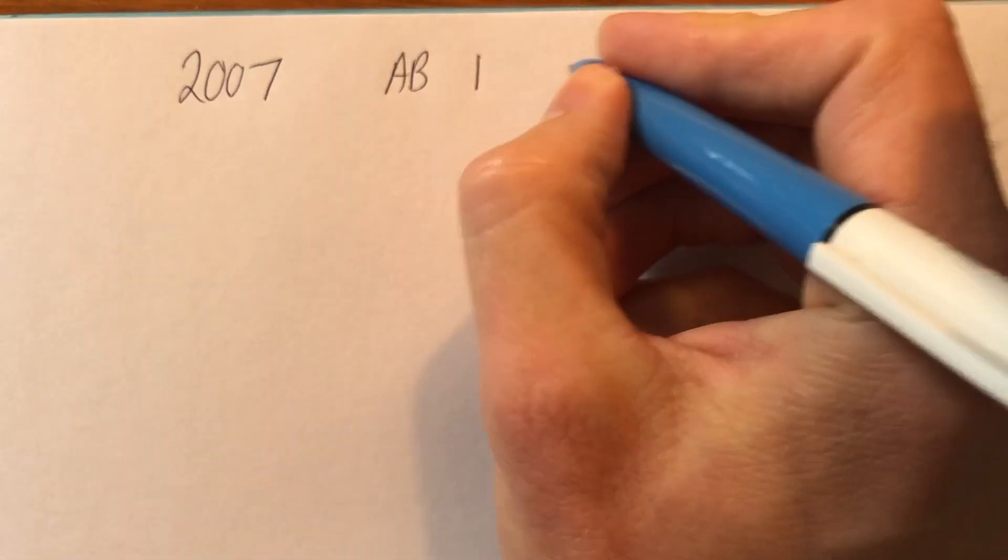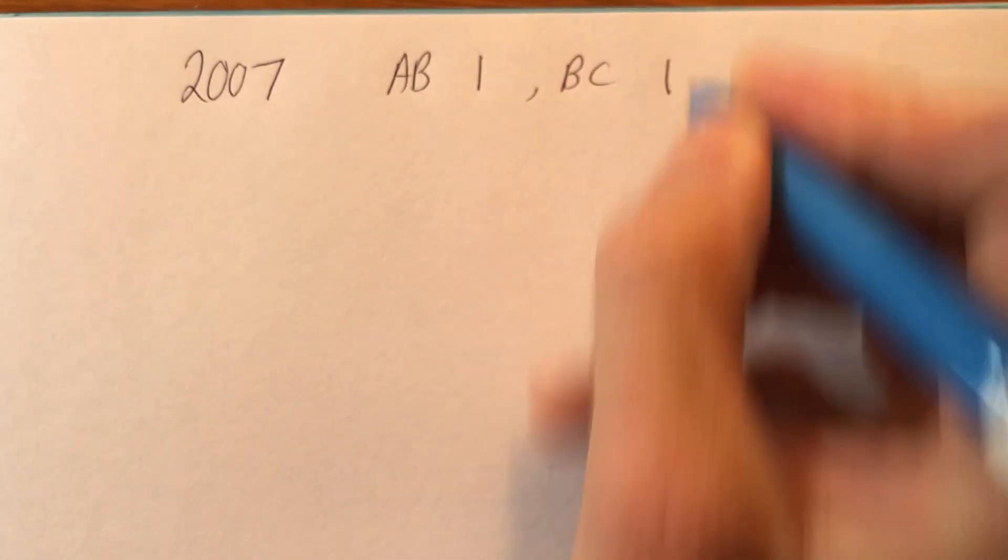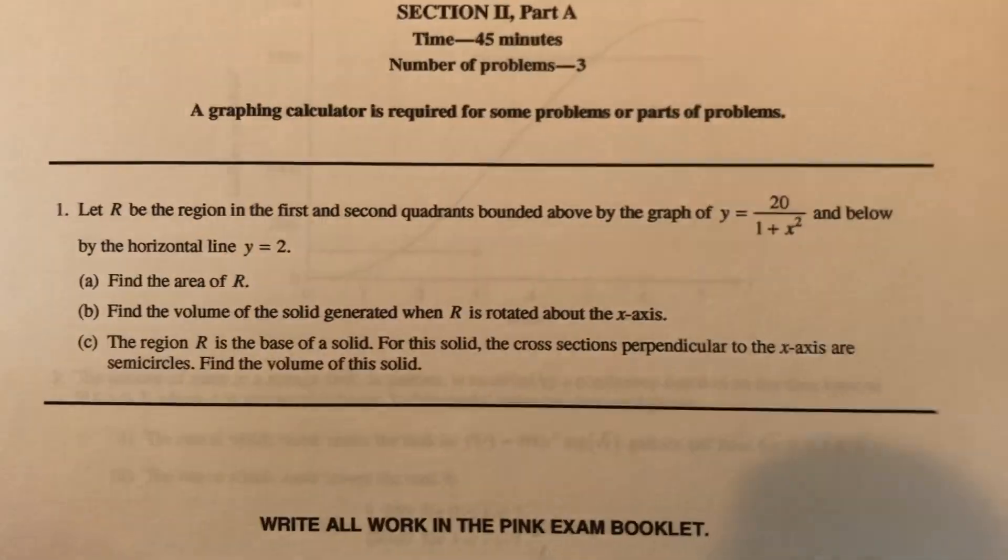Let's do the 2007 free response problem. It's AB 1, BC 1. It's also actually number one on the BC test. So let's look at it, see what it says, and go from there.